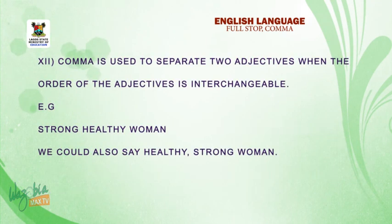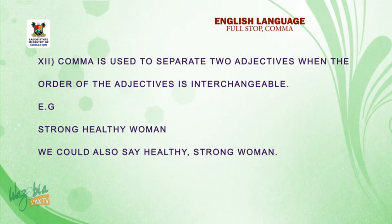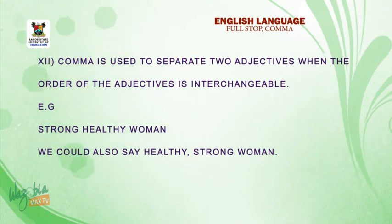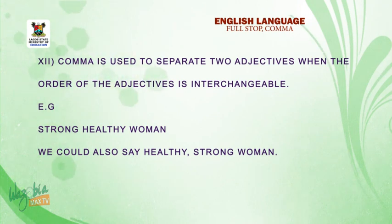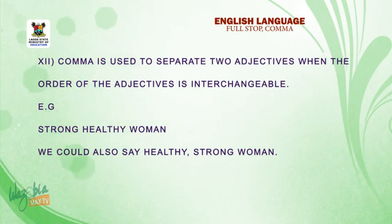Number twelve: comma is used to separate two adjectives when the order of the adjectives is interchangeable. E.g., strong, healthy woman. We could also say, healthy, strong woman.